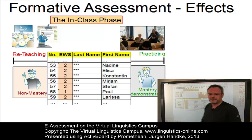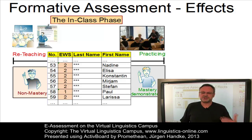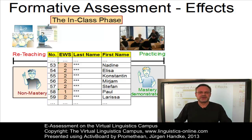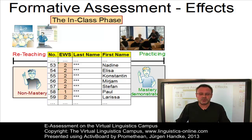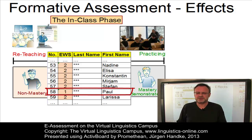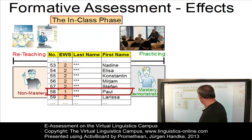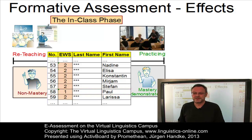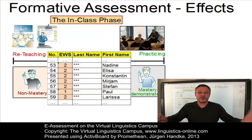Here is a fragment of a class-related spreadsheet to which the VLC class instructor has access via mouse click. It exhibits the situation after two formative assessments and shows that almost all students have demonstrated mastery. Only student number 58 either had trouble or didn't care. But we can sort this out in class and take care of those students who, for whatever reason, could not demonstrate mastery.